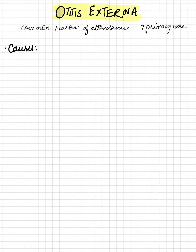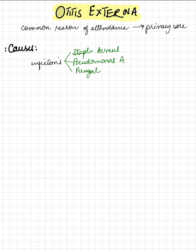Causes of otitis externa include infection, which is further divided into bacterial and fungal. Among bacteria, Staphylococcus aureus and Pseudomonas aeruginosa are the most common.